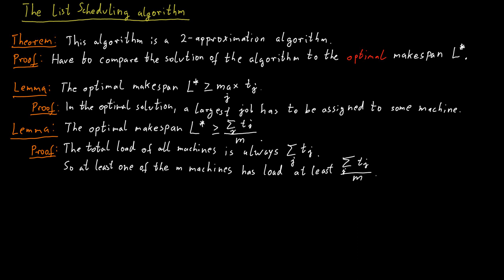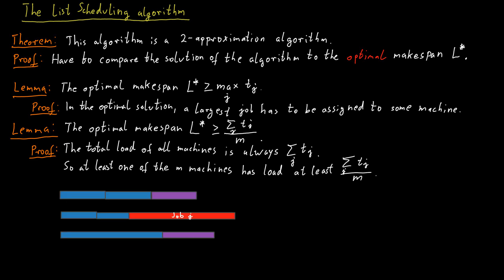Now we just need to use those two lower bounds on the optimal makespan and somehow get an upper bound on the makespan that our greedy algorithm produces and compare the two in some way. Consider the situation after our greedy algorithm has assigned all of the jobs. Then there is a machine with maximum load. Consider such a machine, say it's machine i, and consider the load on that machine, which consists of one or more jobs. Ask yourself what was the last job that was assigned to machine i by our greedy algorithm. Let's say this is job j. And think about the time at which job j was assigned to that machine. What were the loads of all the machines like at that point in time?